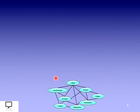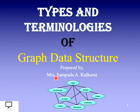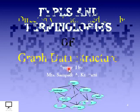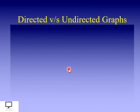Here I am giving you the types and terminologies of graph data structure. I am delivering the details about different types of graphs and what different terminologies are useful while studying a graph data structure. So let's start with the types of graph. Basically, they are directed graph and undirected graph.